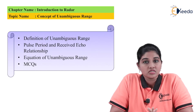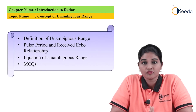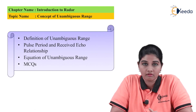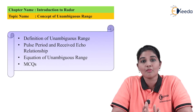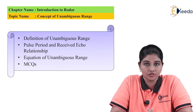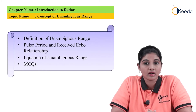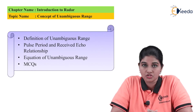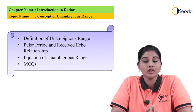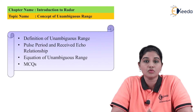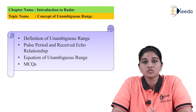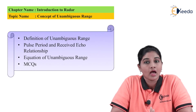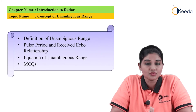When there is an error in the evaluation of range, that range is called ambiguous range — it is basically an incorrect range, meaning it does not match the actual or true value. In radar, the true or actual value of range is called the unambiguous range. However, it is not always the case that the unambiguous range equals the true range, because many parameters affect the performance of the system and may cause the range value to change.